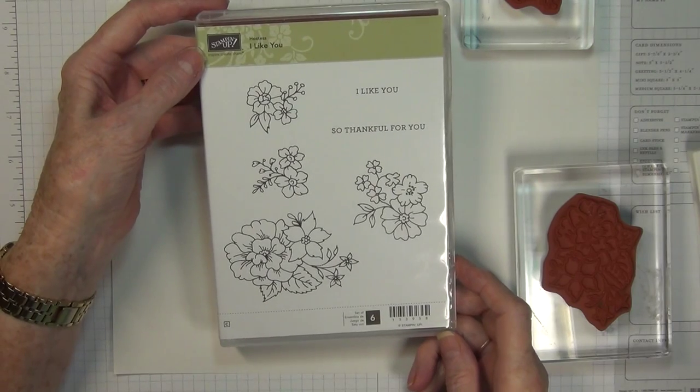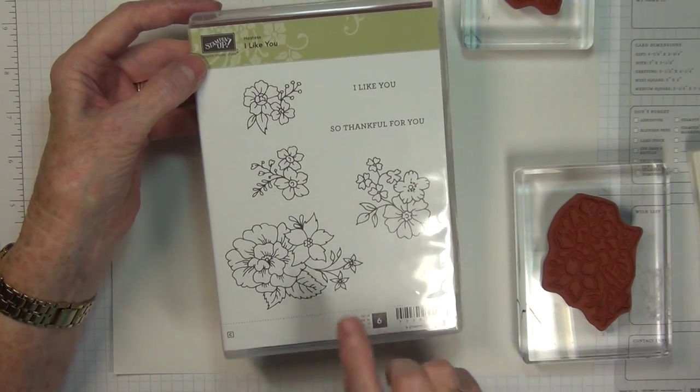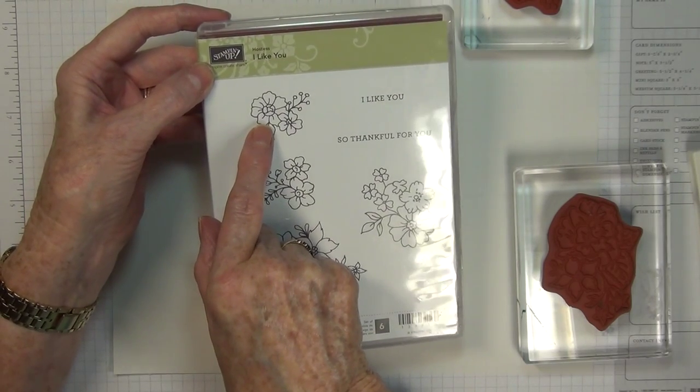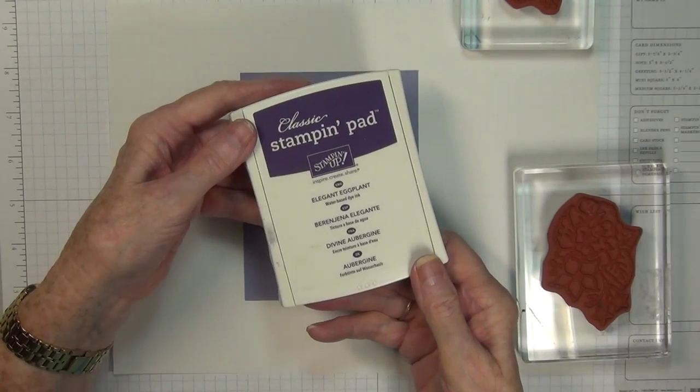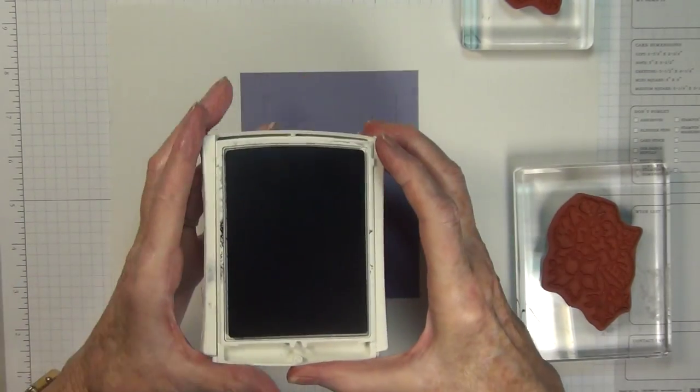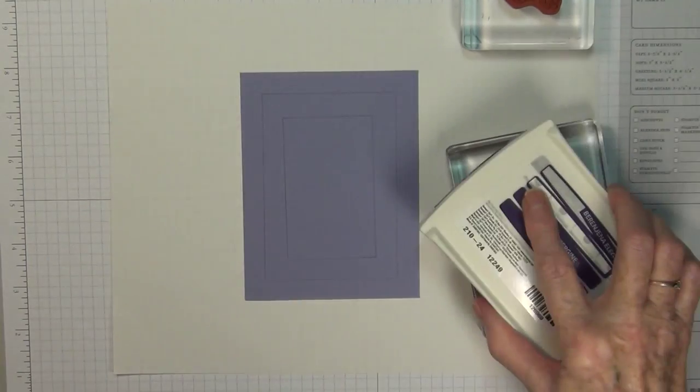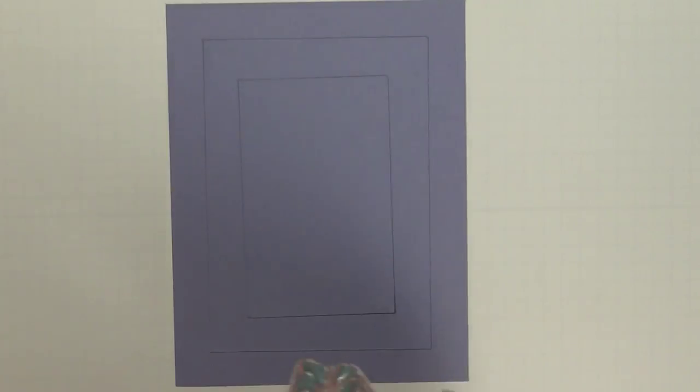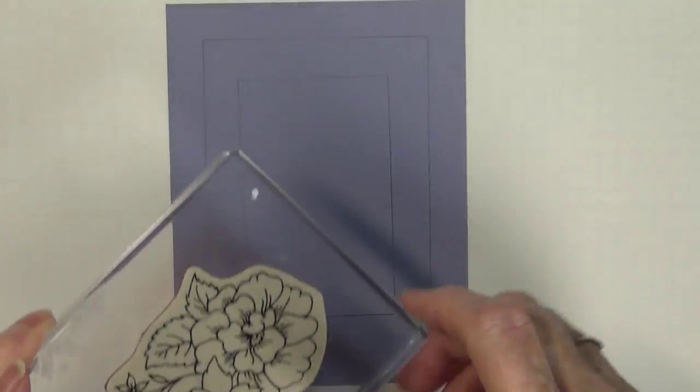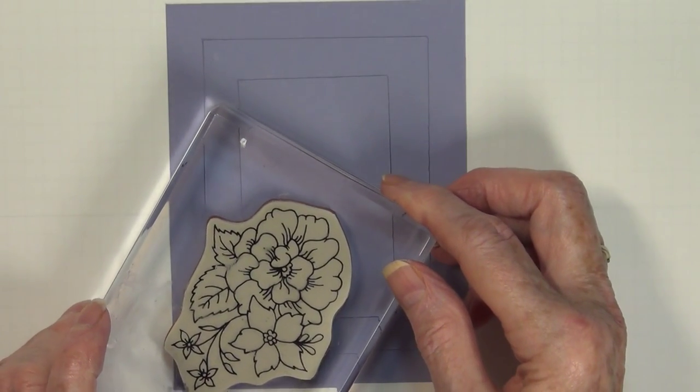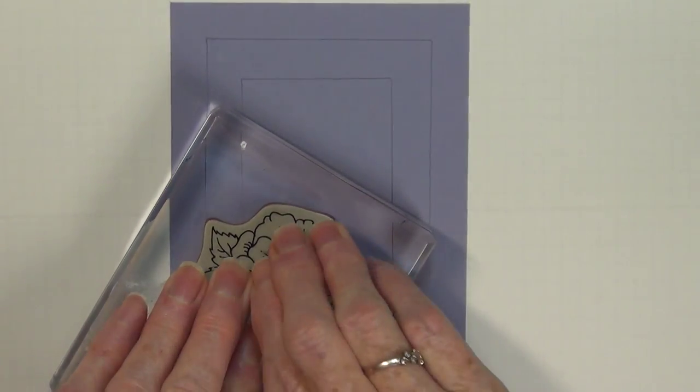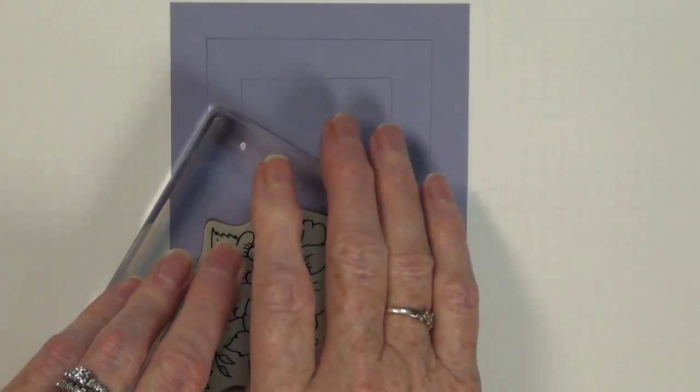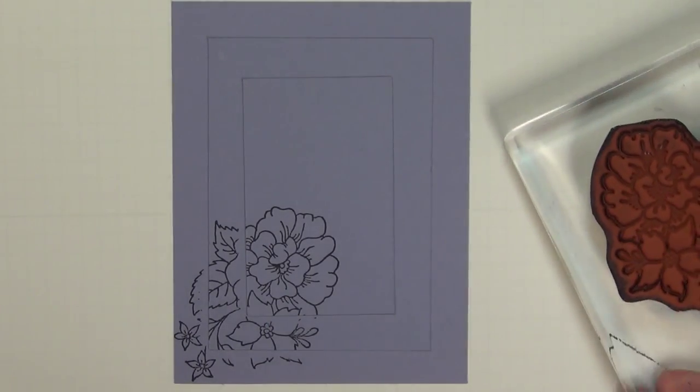The stamp set that I'm using is one of our new Hostess sets, I Like You. I'm going to use this largest flower flourish and then this smaller one at the top. Elegant eggplant is what I'm stamping the big stamp in. I like to place my stamp on the table and bring my ink to the stamp when I'm working with a larger stamp like this. I want that flourish to extend over all three layers, so we will press that on, and then I will re-ink it and I'm going to do my two top corners in the same manner.